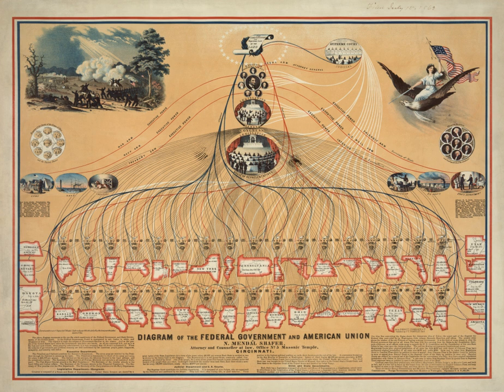For example, while the legislative branch has the power to create law, the executive branch under the president can veto any legislation — an act which, in turn, can be overridden by Congress. The president nominates judges to the nation's highest judiciary authority, the Supreme Court, but those nominees must be approved by Congress. The Supreme Court, in turn, can invalidate unconstitutional laws passed by Congress.